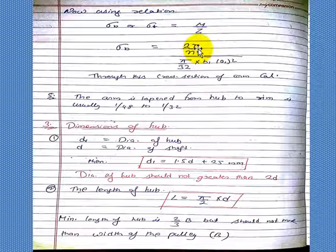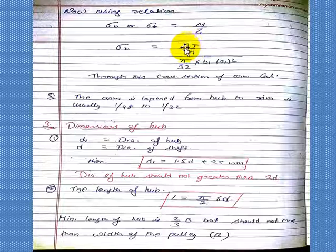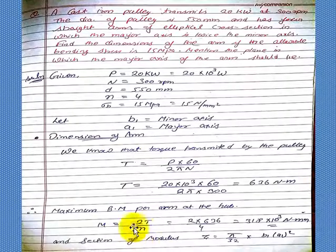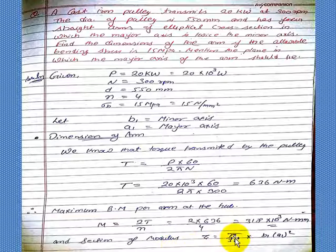Calculate M. So our M is calculated. Now sigma b is also given. Now we will put this formula. So our moment, our bending moment is 318 times 10 to the power 3 newton mm. Section of modulus is pi by 32, b1, a1 square.